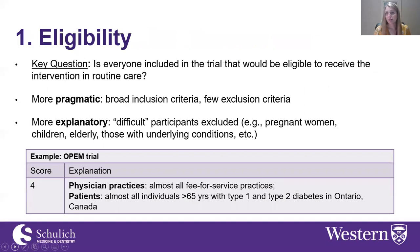The first design domain is eligibility. The key question is: is everyone included in the trial who would be eligible to receive the intervention in routine care? A more pragmatic trial would have broad inclusion criteria, whereas a more explanatory trial might exclude difficult participants. Historically, pregnant women, children, and the elderly have been excluded from trials, but if these groups would be eligible to receive the intervention in routine care, excluding them would result in a more explanatory trial.